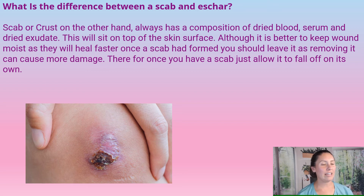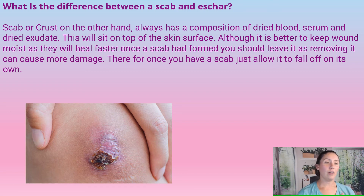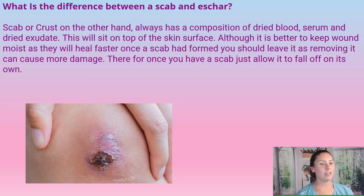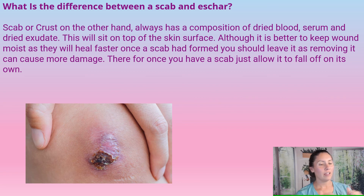As you can see, those are the two differences: eschar is due to not enough oxygen and nutrients going to that area, so the tissue dies. A scab is dry blood, serum, and dried exudate that sits on top of the skin.